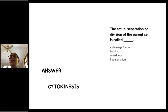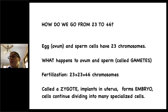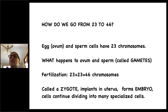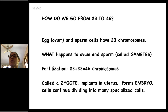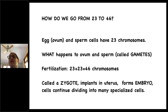Hang in there — this is a lot to take in. You're going to have to review it a few times and watch some YouTube videos. So how do we go from 23 to 46 chromosomes? The egg and sperm cells each have 23 chromosomes. Fertilization occurs when the egg is fertilized by the sperm cell, producing 46 chromosomes — that's called a zygote. It implants in the woman's uterus, forms an embryo, and the cells continue dividing into many specialized cells, all with 46 chromosomes.